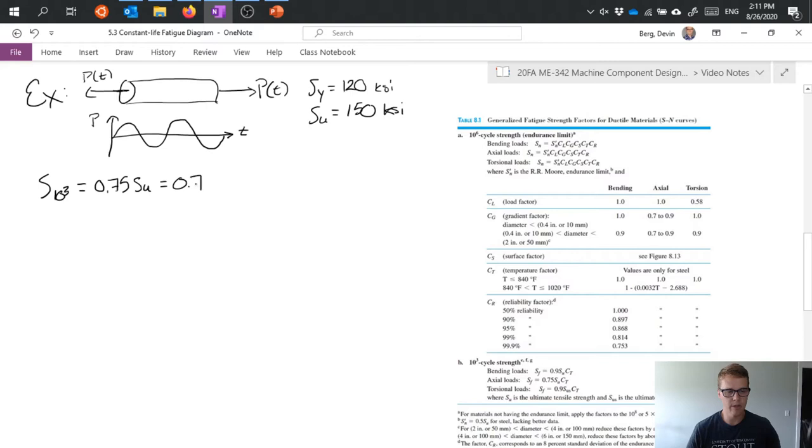So that's easy enough. We can take 0.75 plug in our 150 ksi and we get 112 ksi.